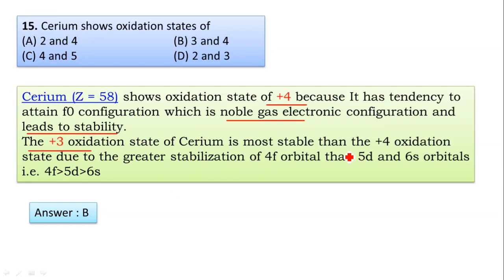And also cerium shows +3 oxidation state, which is the most stable common oxidation state of cerium. The +3 state is due to the greater stabilization of 4f orbital than 5d and 6s orbitals. Hence, the common oxidation state is +3 and the other oxidation state is +4. Hence, the answer is B. Cerium shows oxidation state of +3 and +4.